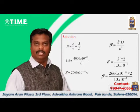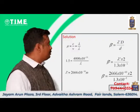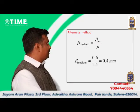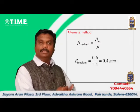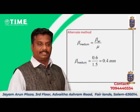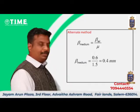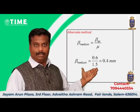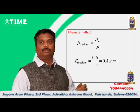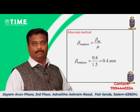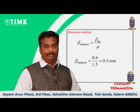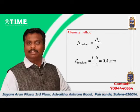Now for the shortcut method: beta medium equals beta in air divided by mu. So beta dash equals beta divided by mu. Beta in air is 0.6 mm and mu is 1.5. Therefore beta medium equals 0.6 divided by 1.5, which gives 0.4 millimeters.